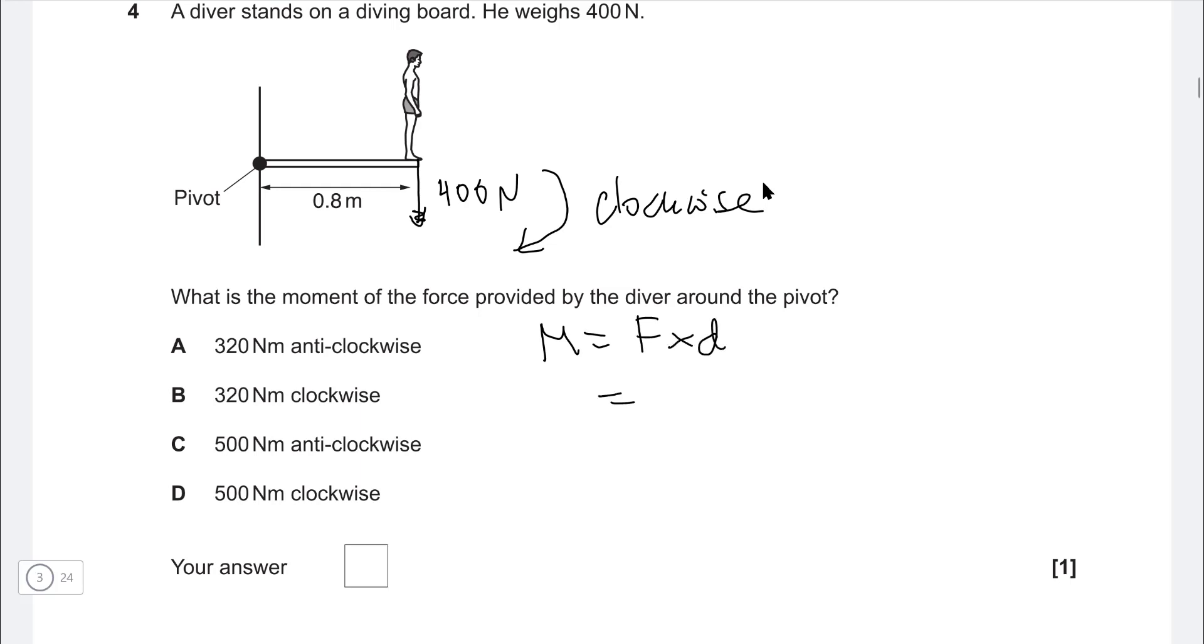So all we need to do to find the moment is take the force, multiply that by the distance. So that's going to be 400 multiplied by 0.8. And this here will give me 320 newton meters in the clockwise direction. Correct answer is B.